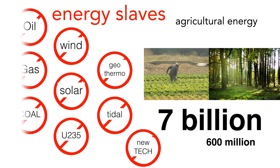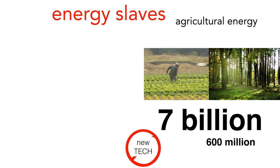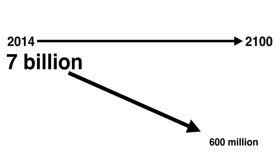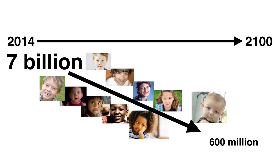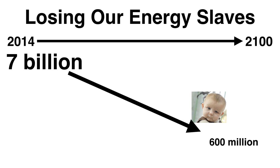However, should we lose today's energy slaves? Should renewable energy slaves never replace them? Should new technology energy slaves never come online? Agricultural energy could feed possibly 600 million people. If this analysis is correct, during this century, our ability to feed 7 billion could drop to 600 million. Nine of every ten of our children could starve to death or die fighting over food. Losing our energy slaves could mean humans, we have a problem.